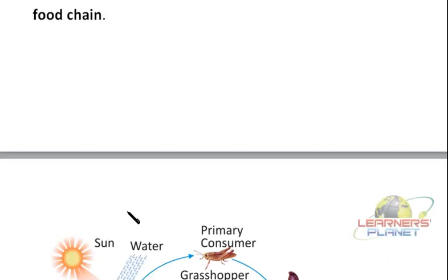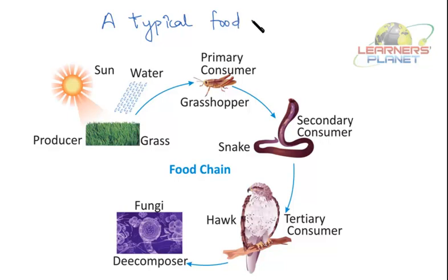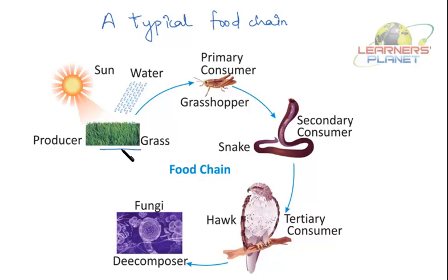Let us see in the figure. This is the beautiful picture of a typical food chain. Here you can see a beautiful diagram, a beautiful cycle. Can you think of what is actually happening in these food chains? Here you can see that there is the sun, which is the major source of heat and light. And here you can see the grass — photosynthesis occurs with the help of sunlight.